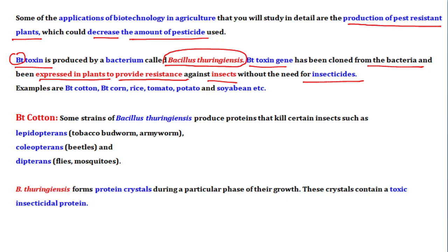With the help of the Bt toxin gene, we have created many pest-resistant plants, like Bt cotton, Bt corn, rice, tomato, and potato. These plants have been made pest-resistant using the insecticidal gene.